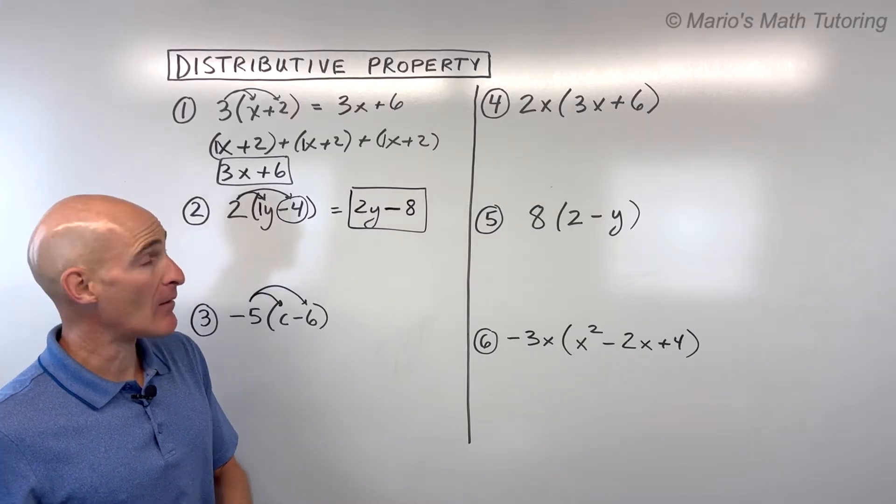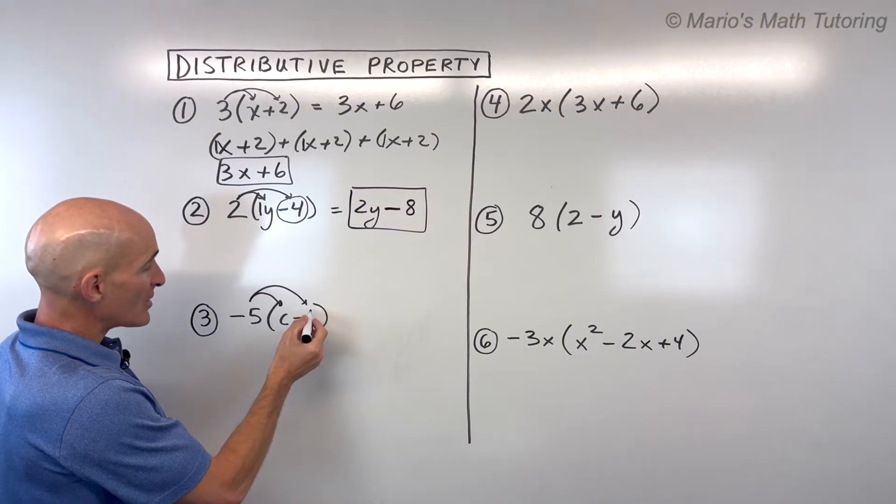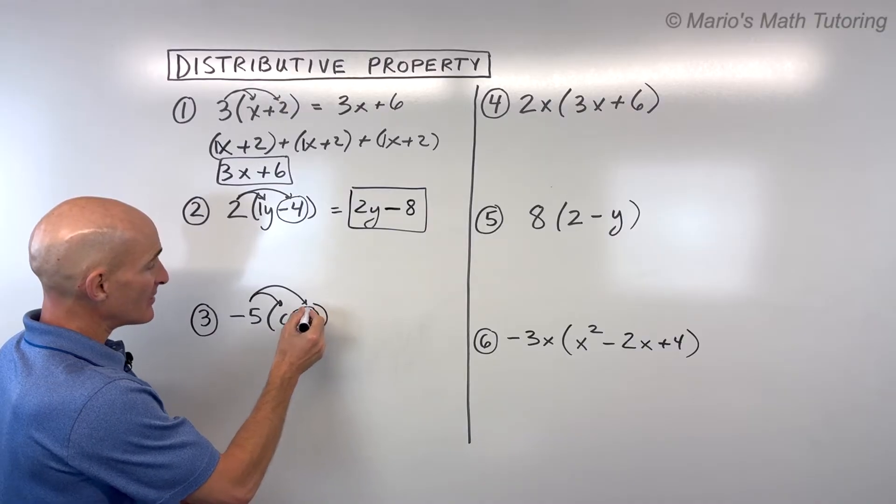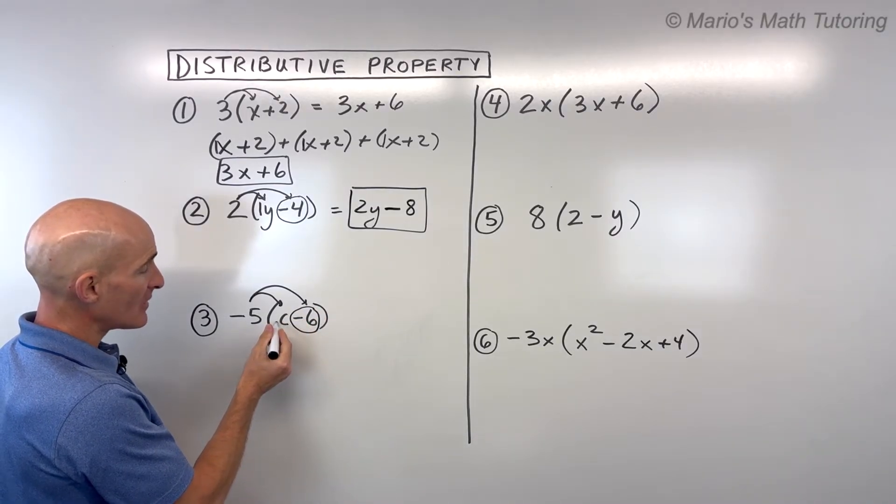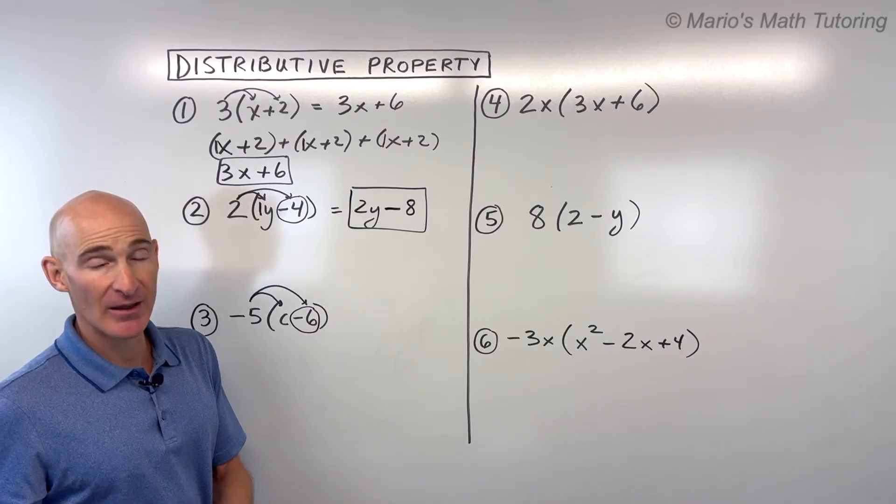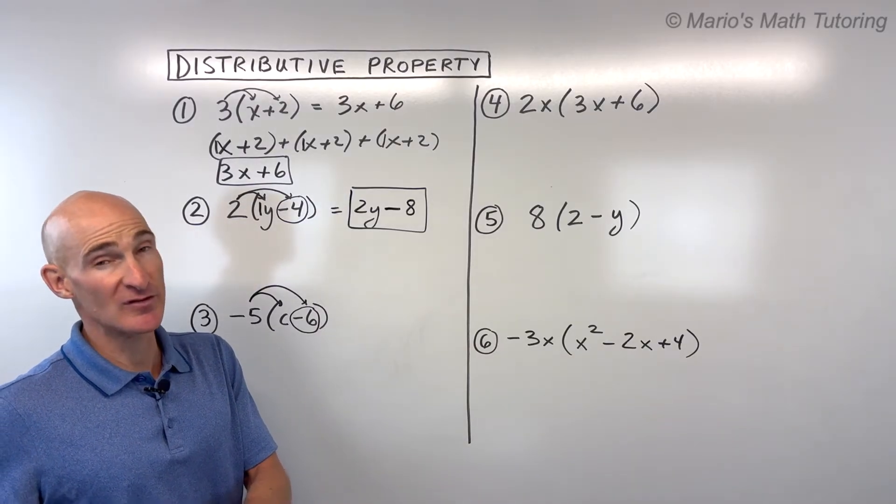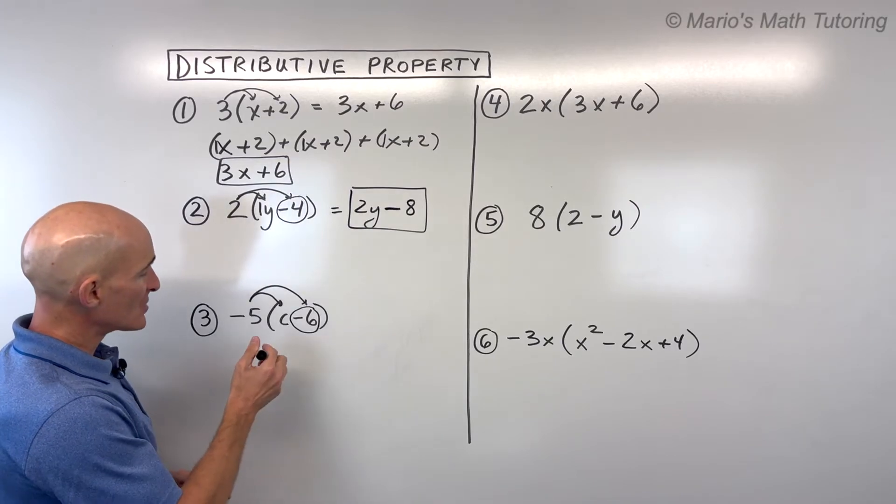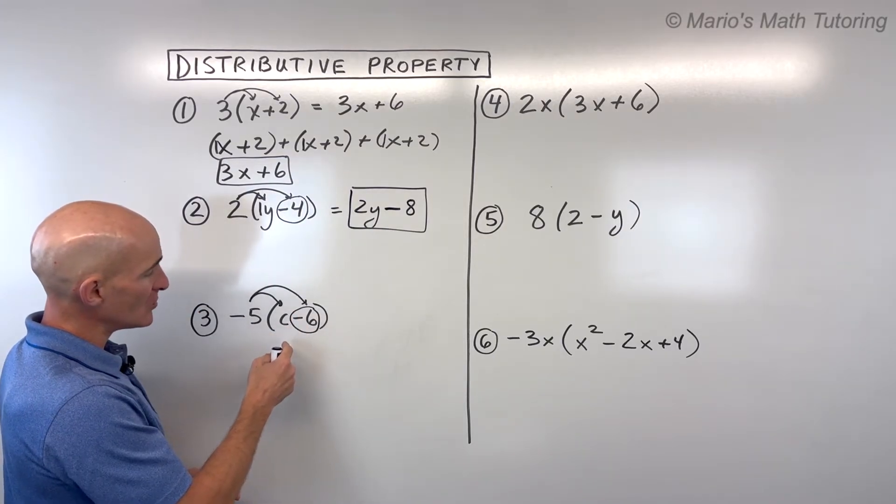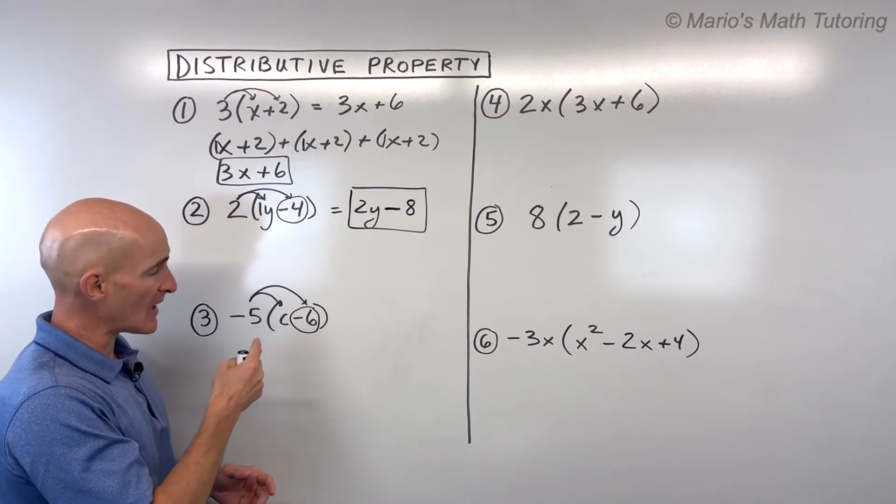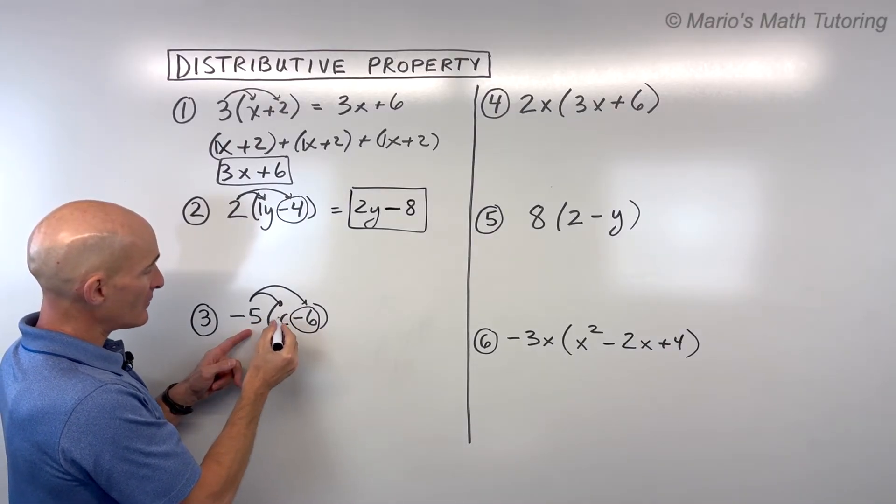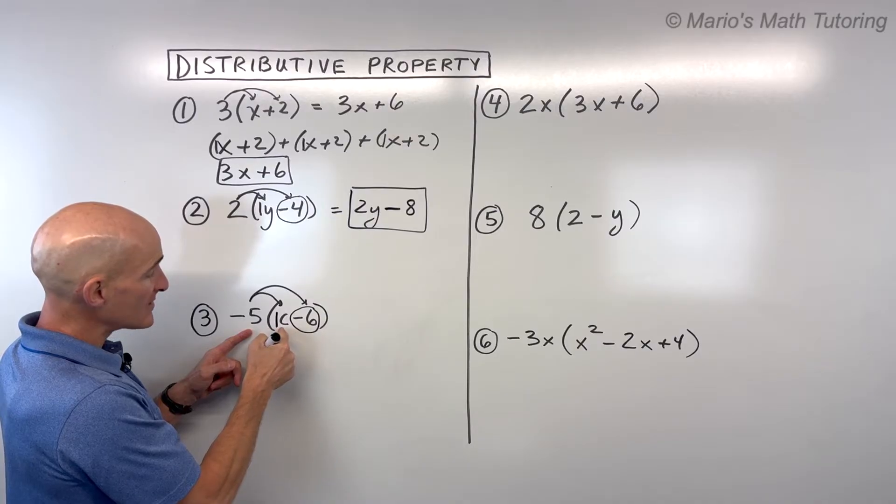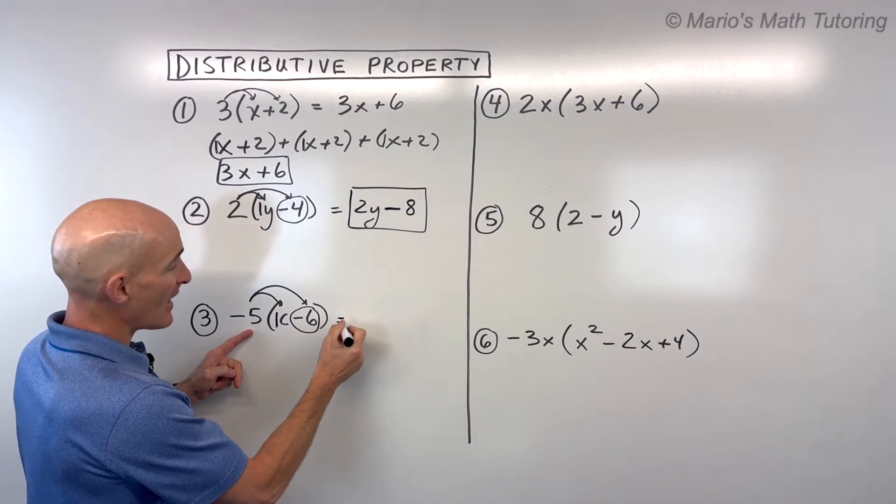Again, just like the last problem, you want to make sure that you capture the sign, whether it's positive or negative. So just look to the left. Now, if there's nothing to the left, that means it's positive. Okay, but if you see a plus sign, it's positive. If you see a minus sign, that's negative. So it's a good kind of habit to get into either circling or in your mind capturing or realizing these go together.